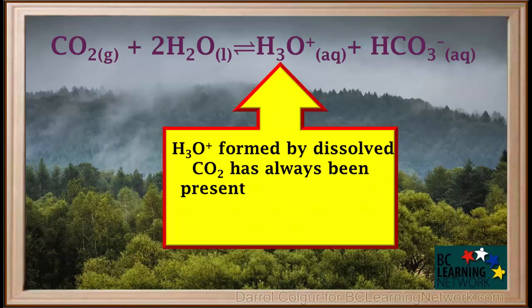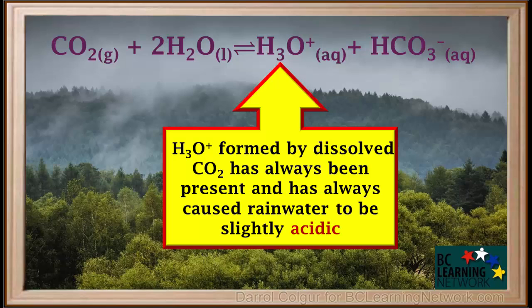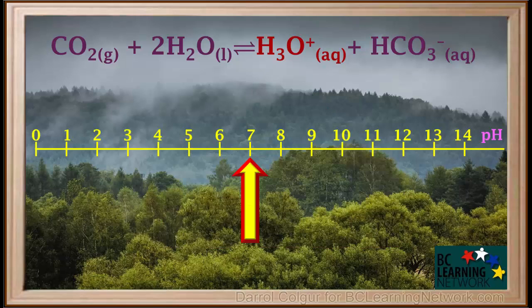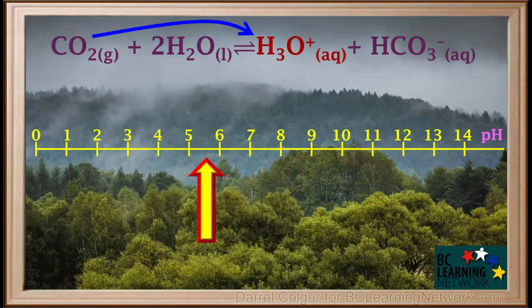H3O+ formed by dissolved CO2 has always been present and has always caused rainwater to be slightly acidic. The presence of dissolved CO2 in natural rainwater, unaffected by human activity, produces enough hydronium to bring the pH as low as 5.6.